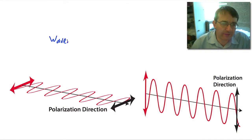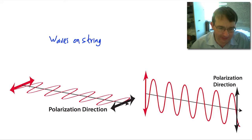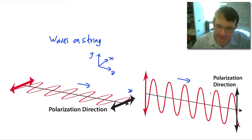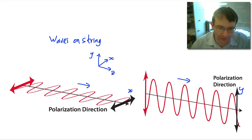Here we're showing our waves on a string — these are transverse waves, because the displacement of the medium is perpendicular to the direction of motion of the wave. The wave is moving in this direction. With three axes: the z-axis along which the wave is traveling, an x-axis, and a y-axis. Here the wave vibrates in the x-direction, and here it vibrates in the y-direction. These are two different waves with orthogonal motion, but both are transverse waves.